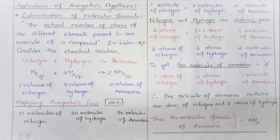We are going to determine the formula of ammonia using Avogadro's law, which says equal volumes of all gases contain equal number of molecules under similar conditions of temperature and pressure — that is, V is directly proportional to N. So if one volume of nitrogen contains N molecules, three volumes of hydrogen contains 3N molecules, and two volumes of ammonia contains 2N molecules. Dividing by N, we get: one molecule of nitrogen reacts with three molecules of hydrogen to give two molecules of ammonia.